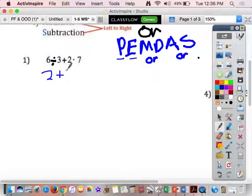6 divided by 3 is 2. Now I rewrite it. Always rewrite it. Every step, you're going to rewrite it. Slow down to go fast. We talked about this in class. Slow down to go fast.